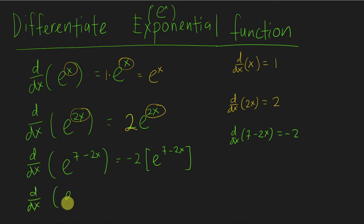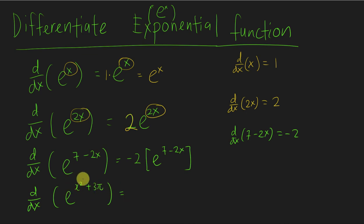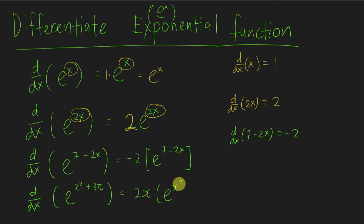Let's say we have e^(x² + 3π). If I do this question, I will just differentiate x² + 3π. The 3π is just a number, so you don't need to panic about it. You just differentiate x², you will get 2x. So you get 2x and then copy this: e^(x² + 3π). That gives you the answer.